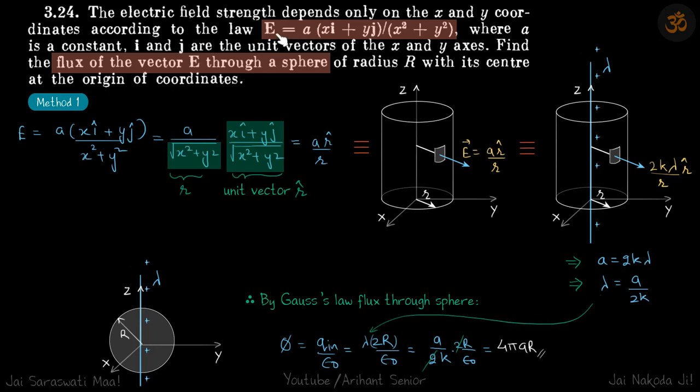Just imagine if instead of electric field he had given you that you have a charge carrying wire, then what is the flux passing through the sphere, you would have done it in 2 seconds. Directly 2r into lambda divided by epsilon that would have been your answer. But here instead of telling that it's a wire, he has given an electric field generated due to that wire. You have to think opposite sometimes. If electric field is given, you need to think this electric field came from where. It came from a straight wire, so then our problem became very simple.